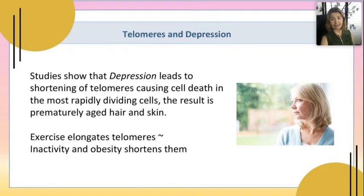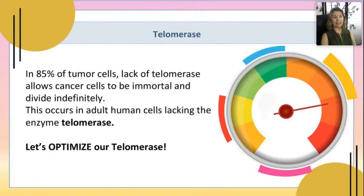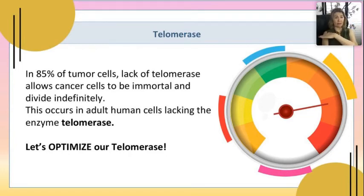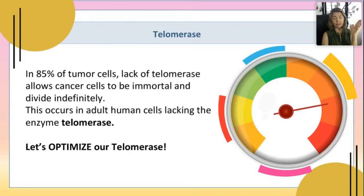Now we're closer to 99%. Let's continue. Regarding telomerase: in 85% of tumor cells, the lack of telomerase allows cancer cells to be immortal and to divide indefinitely. This occurs in adult human cells lacking the enzyme telomerase. So let's optimize our telomerase now. Imagine a meter going from empty — half full — all the way full, filling up with beautiful enzyme telomerase.